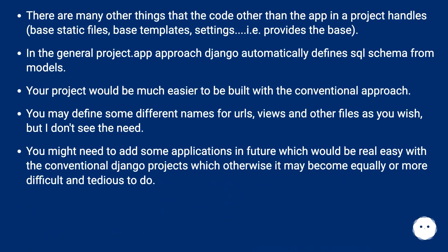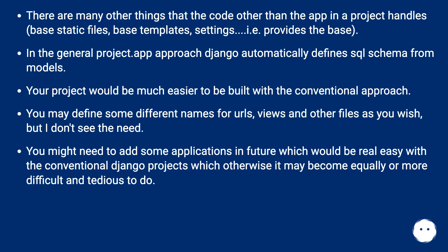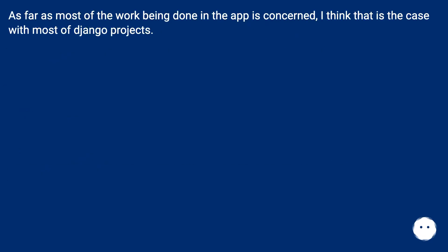There are many other things the code handles other than the app in a project — base static files, base templates, settings — providing the base. In the general project.app approach, Django automatically defines SQL schema from models. Your project would be much easier to build with the conventional approach. You may define different names for URLs, views, and other files as you wish, but adding applications in the future is much easier with the conventional Django project structure. Most of the work being done in the app is the case with most Django projects.